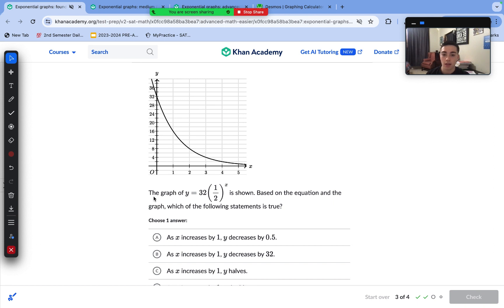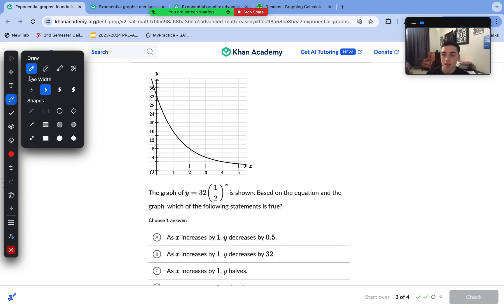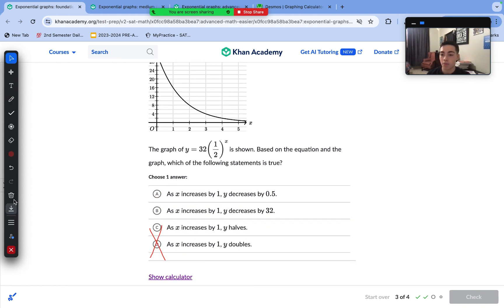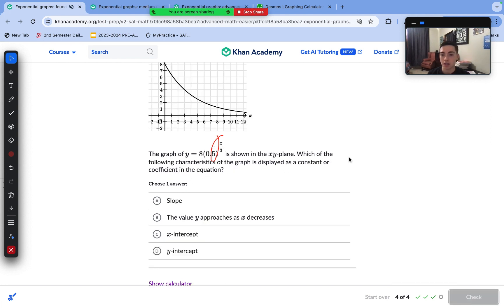Now with this one, based on the equation and the graph, which of the following statements is true? "As x increases by 1, decreases by a certain amount"—this is for linear equations, so we can cross both A and B out. "As x increases by 1, y halves." We can see that our increasing factor is 1/2, so that makes sense. If there was a 2 inside the parentheses, y would be doubling. Answer choice C is correct here.